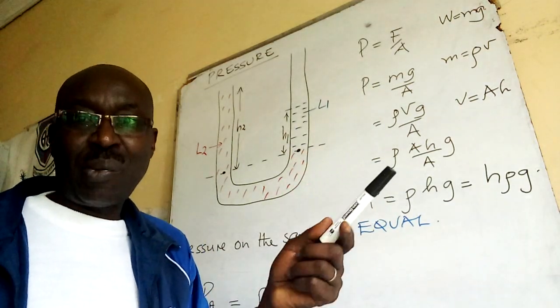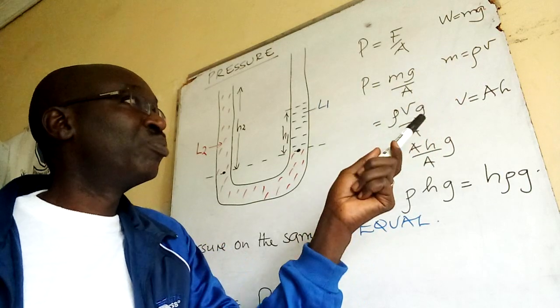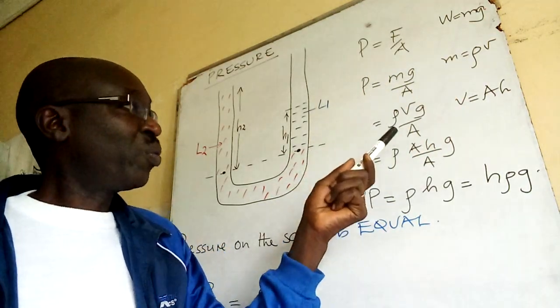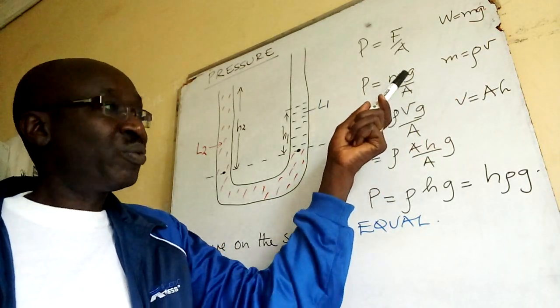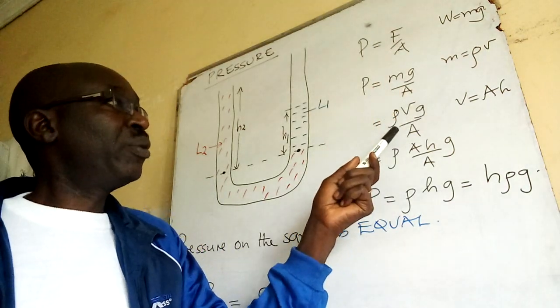Mass is a product of density and volume. So we remove mass, we write ρV. We drop G, divide by A.